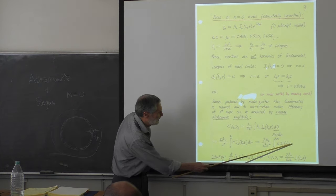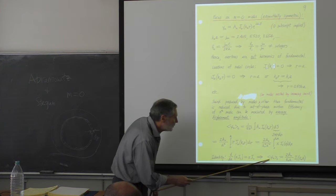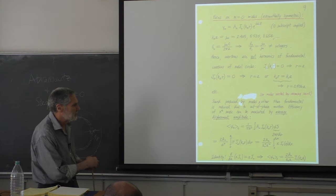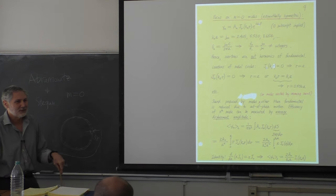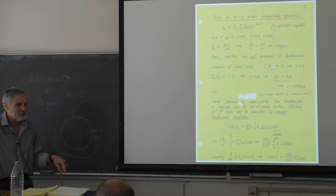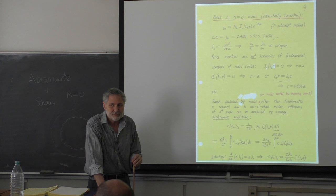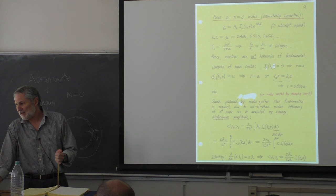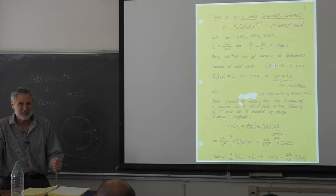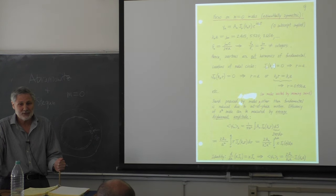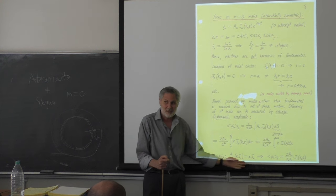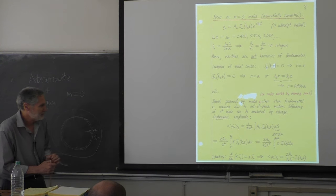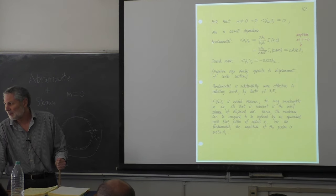This is an anti-derivative, so here it is. The average displacement involves a J₁ function evaluated at the argument of the mode. The average displacement of these azimuthally symmetric J₀ modes involves a J₁ function. We're going to see this again today, and next quarter at least once. It's just something you get used to when dealing with these special functions.